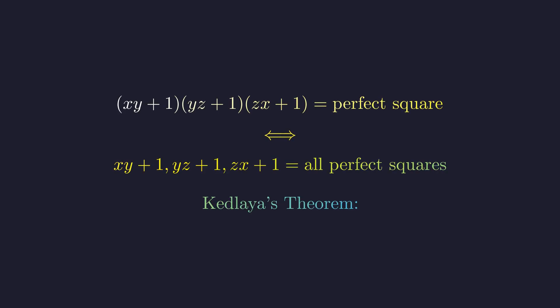Here's a beautiful theorem discovered by Kiran Kadlaia. When you take three positive integers x, y, and z and form this particular product, something remarkable happens. The entire product turns out to be a perfect square if and only if each individual factor is also a perfect square.